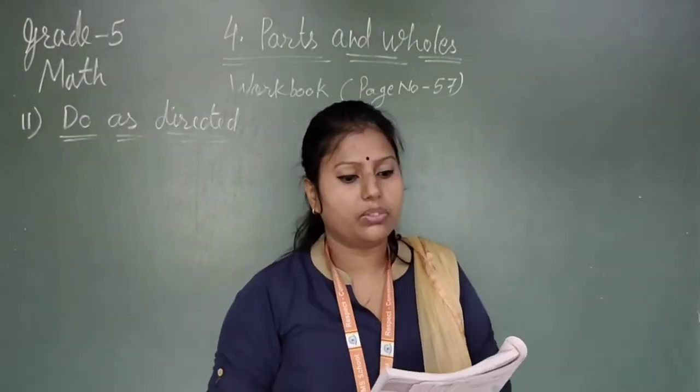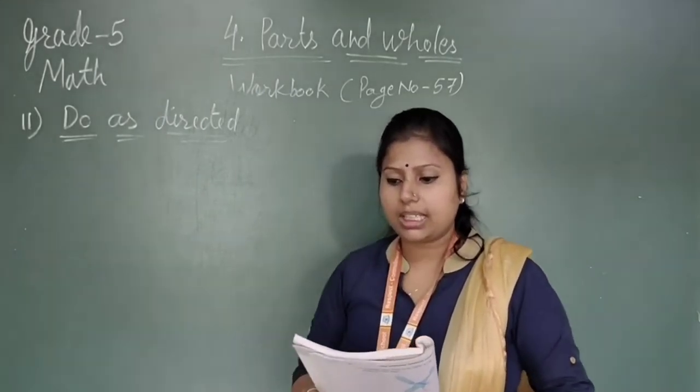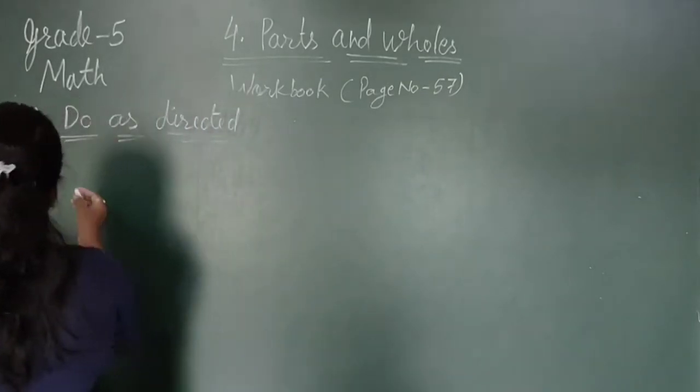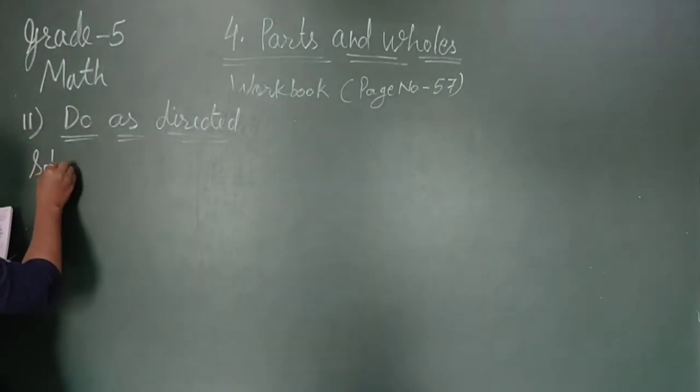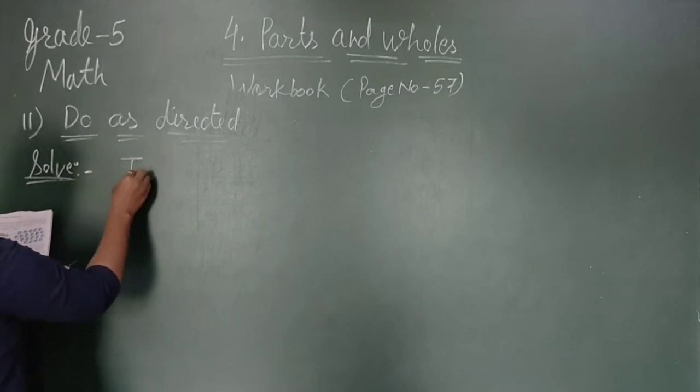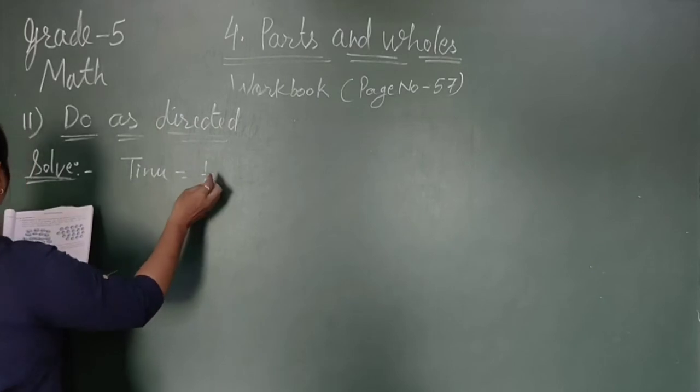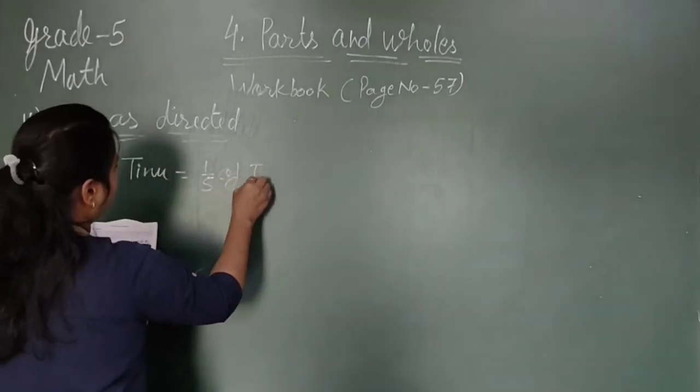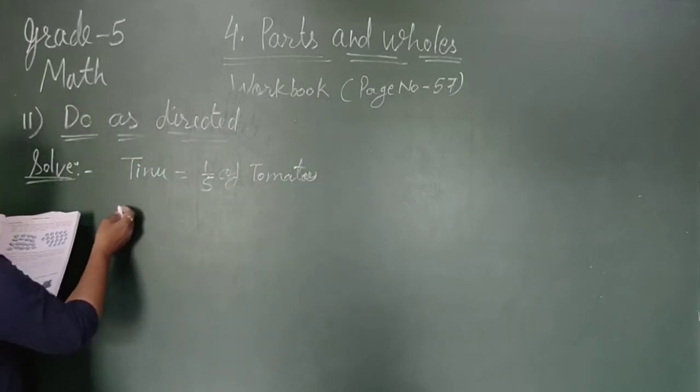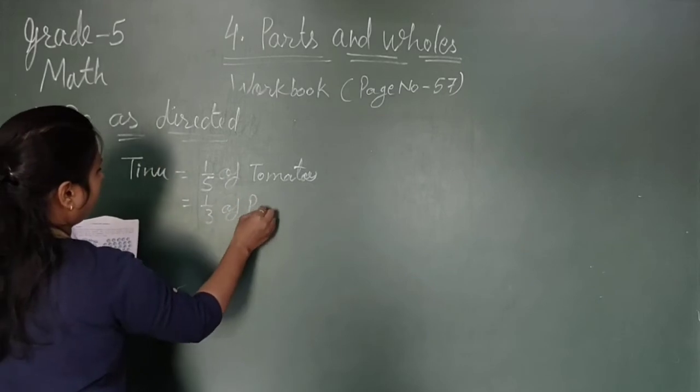Ranu wanted to give these vegetables to his friends. So, first friend is Tinu. Tinu is having one-fifth of tomatoes and one-third of potatoes.